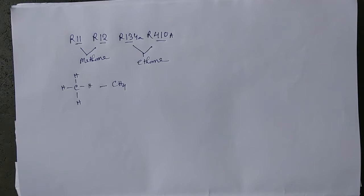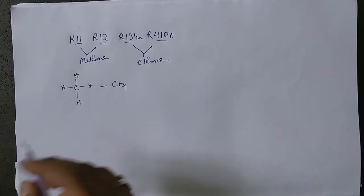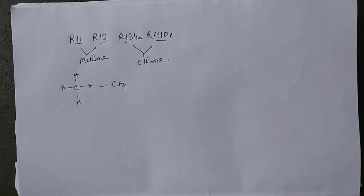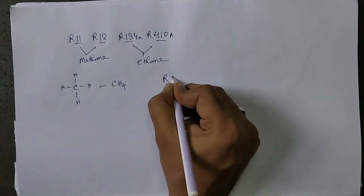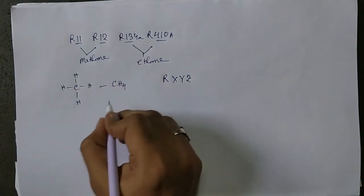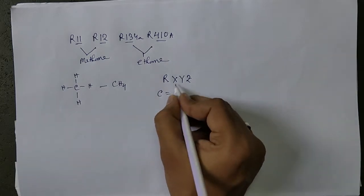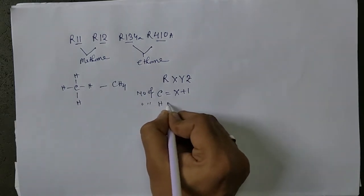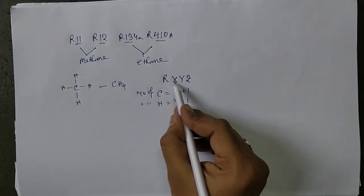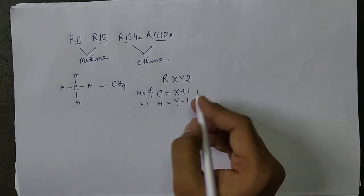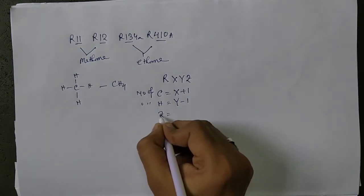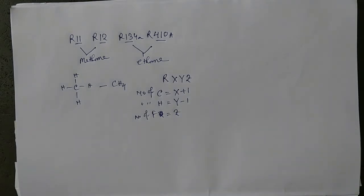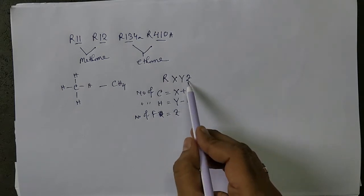When a refrigerant is represented, hydrogen is replaced by chlorine and fluorine atoms. The hydrogen atom is replaced by chlorine or fluorine atoms. The exact formula is R-X-Y-Z. The number of carbon is X plus 1, the number of hydrogen is Y minus 1, and Z equals the number of fluorine atoms.